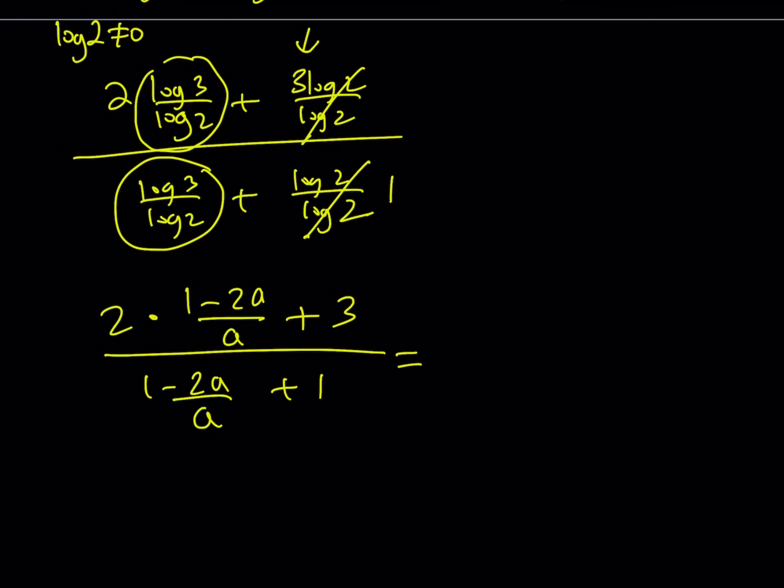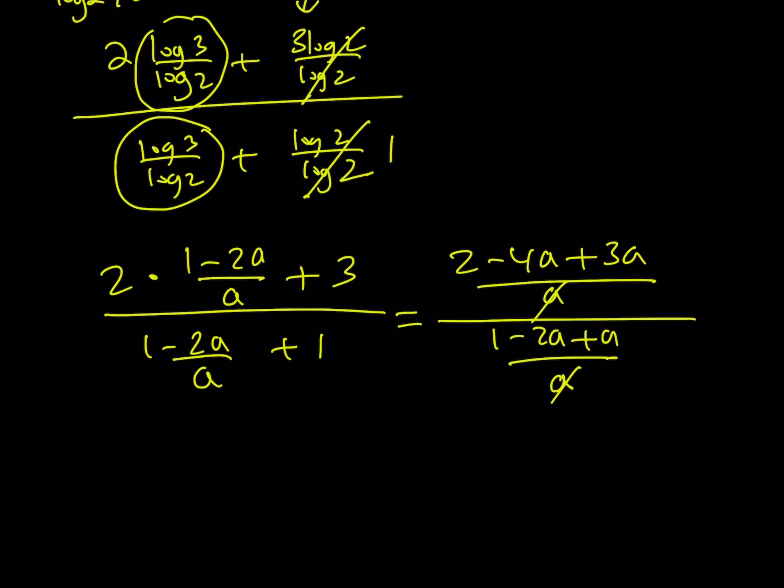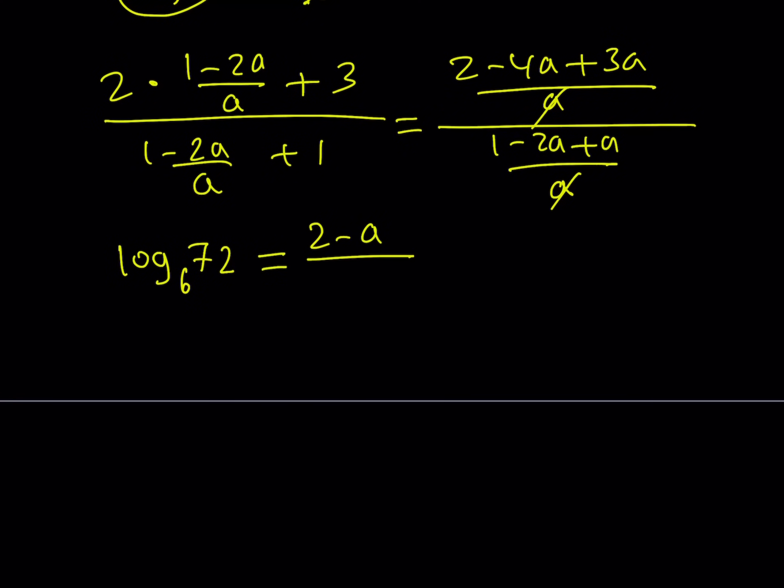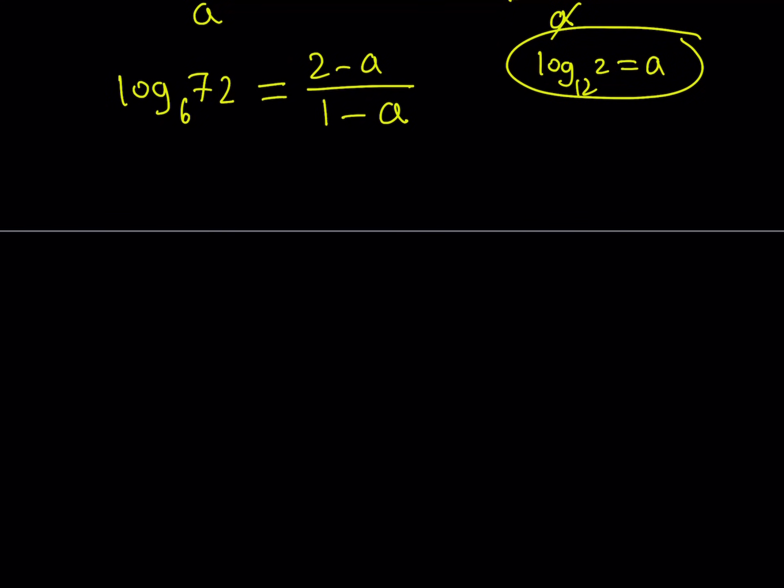Multiply and make a common denominator. That's going to be 2 minus 4A. And then plus 3A, because I need to make a common denominator. And then that's going to be A. The bottom is going to be 1 minus 2A plus A over A. The A cancels out when you flip and multiply. The top is going to give you 2 minus A. So let's go ahead and write it. Let's remember the original expression. I was trying to find log 72 with base 6. And that can be written as from here, 2 minus A divided by 1 minus A. So we were given this expression. Remember log 2 with base 12 was equal to A. And we were trying to find the value of log 72 with base 6.